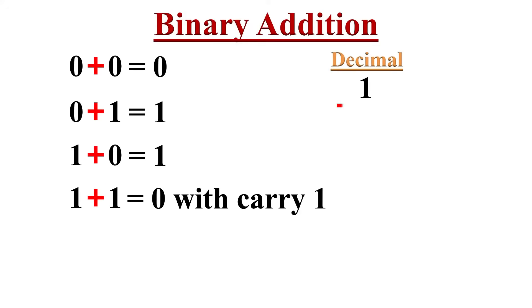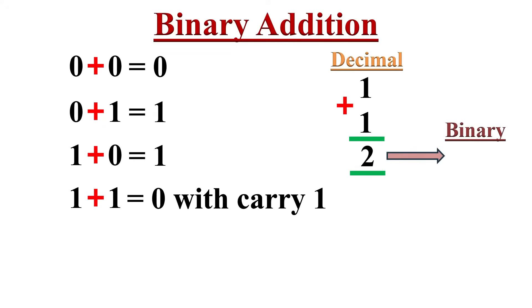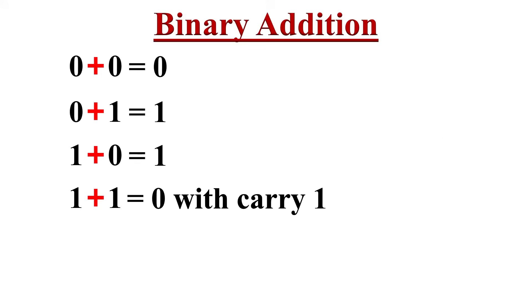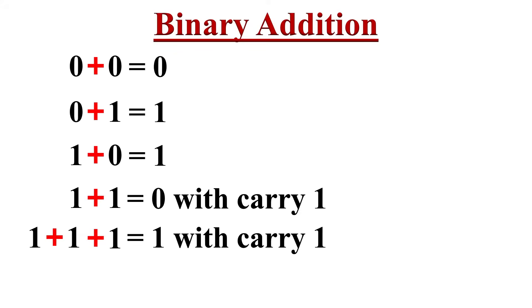In the decimal number system, 1 plus 1 equals 2. The binary equivalent of 2 is 01. So when we do binary addition of 1 plus 1, we write 0 as the answer with 1 carried to the next column. Similarly, if we are adding 1 plus 1 with a carry of 1 from the previous column, then the answer is 1 with a carry of 1 to the next column.